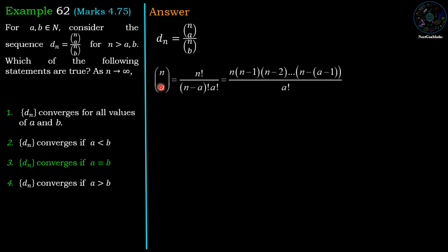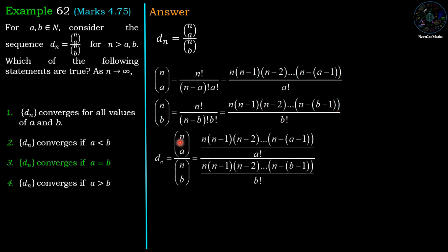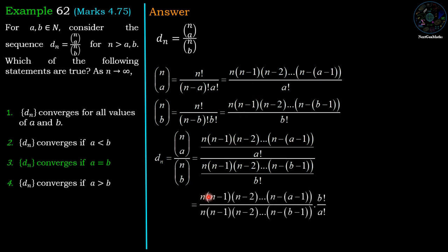Now, nCa equals n factorial divided by (n minus a) factorial times a factorial. In simplified form this is n(n−1)(n−2)···(n−a−1) divided by a factorial. Similarly, nCb equals n(n−1)(n−2)···(n−b−1) divided by b factorial. So dn equals nCa divided by nCb, and taking the ratio gives n(n−1)(n−2)···(n−a−1) times b factorial, divided by n(n−1)(n−2)···(n−b−1) times a factorial.